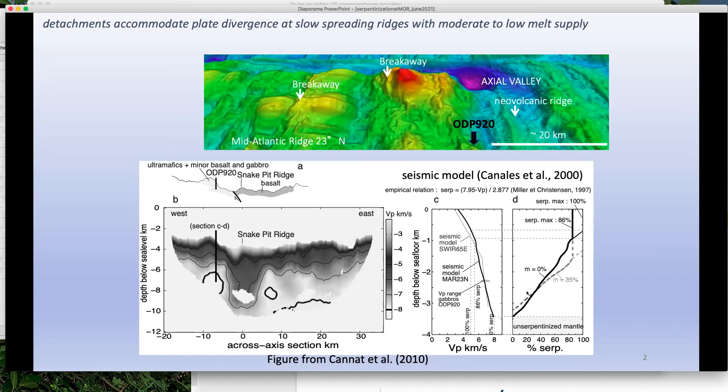A very important point is that at some point, the only way you can interpret the very low velocities you get is to say it's not just serpentinization — it's obviously also fracturing. So this part is probably made of serpentine, but it could be made of anything. It's interesting to look at a place where we know there is very little gabbro.